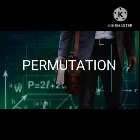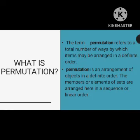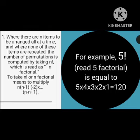Hello everyone, for today I will be discussing about permutation. When we say permutation, it is the term that refers to the total number of ways by which items may be arranged in a definite order. It is the arrangement of objects in a definite order. The numbers of elements or sets are arranged in a sequence or linear order. Where there are n items to be arranged all at a time and none are repeated, the number of permutations is computed by taking n factorial.